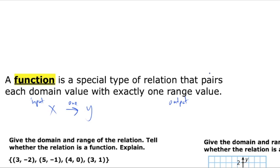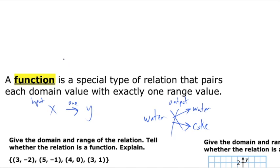What would NOT be a function is if you hit the water button and all of a sudden you get out both a water and a Coke — that's not how the machine should operate. When a single input goes to multiple outputs, that is not a function. One way to test this is the vertical line test: if you run a vertical line through a graph and it only touches a single point on the graph, then it is a function, because we're checking that each x value maps to only one point.